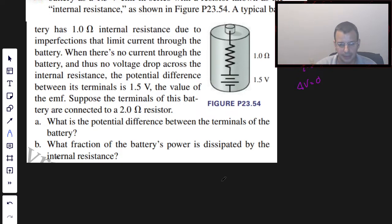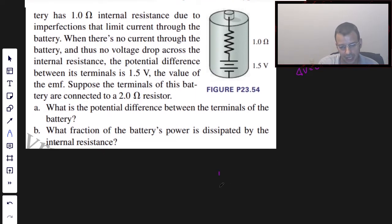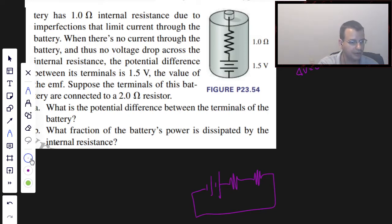So we're going to start by drawing a picture. I know they have a picture, I'm going to draw my own. Resistor, resistor. The first resistor is part of the internal battery. So you notice this is 1, this is 2, and those are ohms. And this is 1.5.